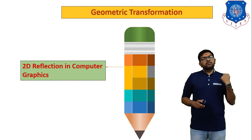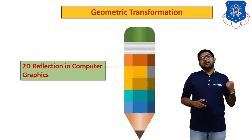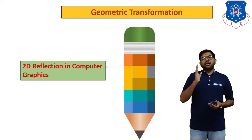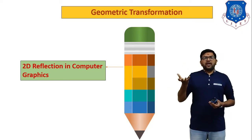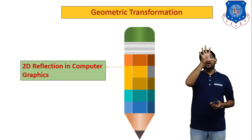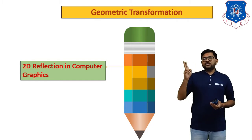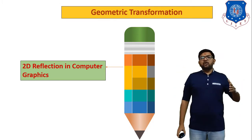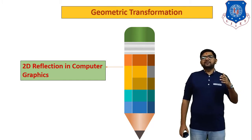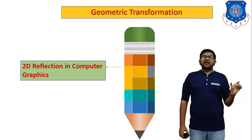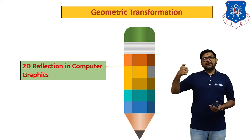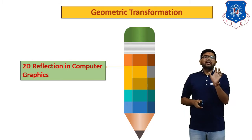In today's session we have to discuss one more transformation process, that is 2D reflection in computer graphics. Reflection is a type of mirror effect. We will discuss reflecting objects about the x-axis or y-axis. In the Cartesian coordinate system, in the first quadrant both x and y are positive; second quadrant x is negative, y is positive; third quadrant both are negative; fourth quadrant x is positive, y is negative. We will use this fundamental in this theory.